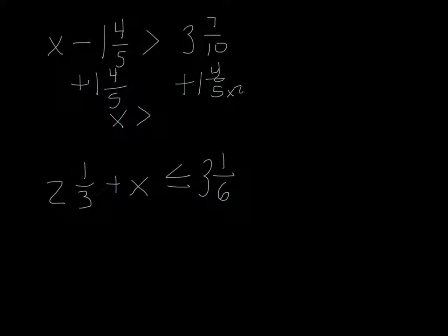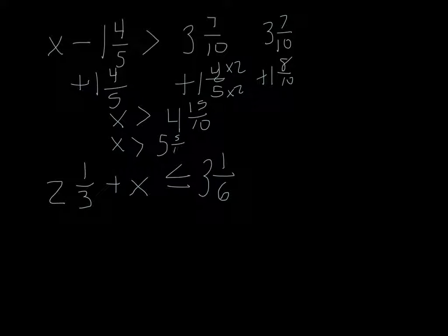I would just convert this to a common denominator of 10, which would make this 3 and 7 tenths plus 1 and 8 tenths. Which, when you add them together, is going to give you 4 and 15 tenths. But since 15 tenths is an improper fraction, 10 is going to go into 15 once, which is going to add 1 to the overall whole number there. You've got 5 and 5 tenths. And 5 tenths can be simplified to 1 half. So, your final solution would be x is greater than 5 and 1 half.